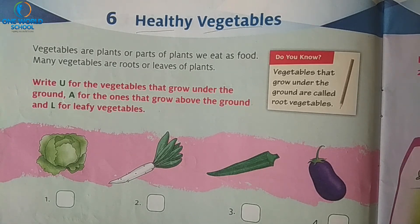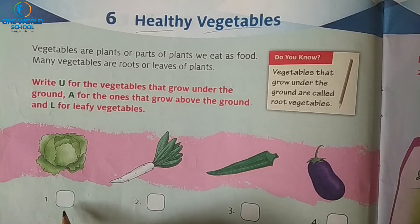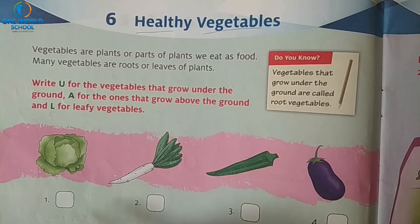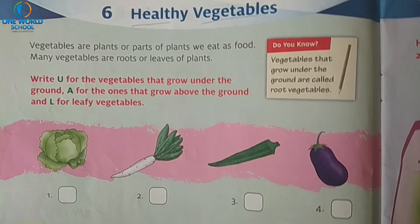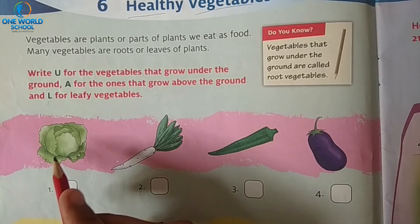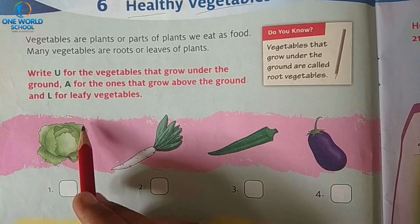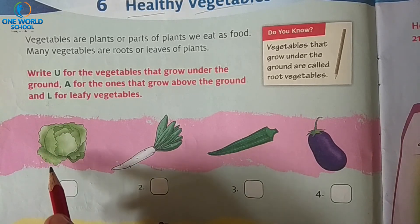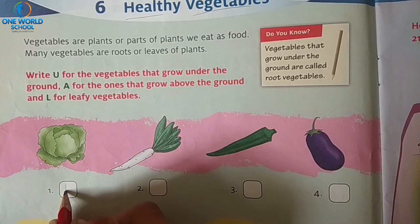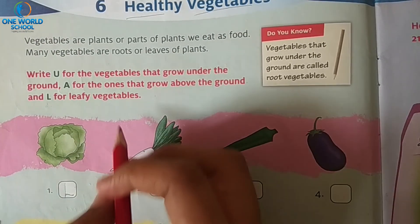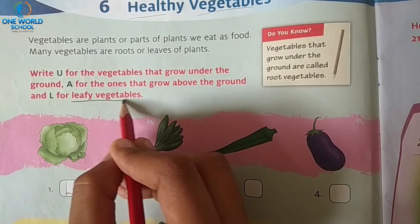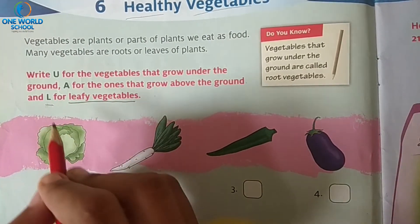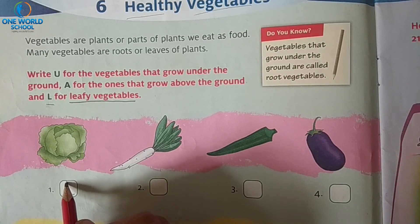Leafy vegetables means part of a plant eaten by humans as a vegetable — plant ke jo leaves hote hain, wo hum human beings khate hain, use hum leafy vegetable bolte hain. So first one is cabbage. Cabbage is a leafy vegetable — kyunki dekho idhar sab jagah pe leaves hain, plant ke leaf ke jaisa hai. So idhar hum kya likhenge? L. Leafy vegetable ke liye sirf L likhna hai.